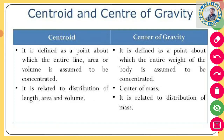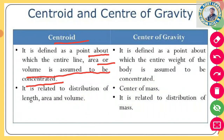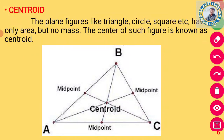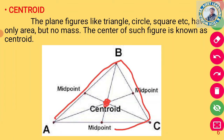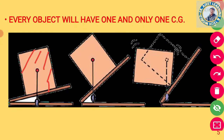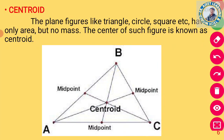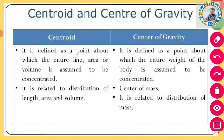Centroid is defined as the point about which the entire line, area, or volume is assumed to be concentrated. Centroid में हम मानते हैं कि सारा area एक point पे concentrated है — whole area is concentrated at this point. But center of gravity में whole mass is concentrated at one point. Centroid में whole area concentrated at one point — that is the difference.